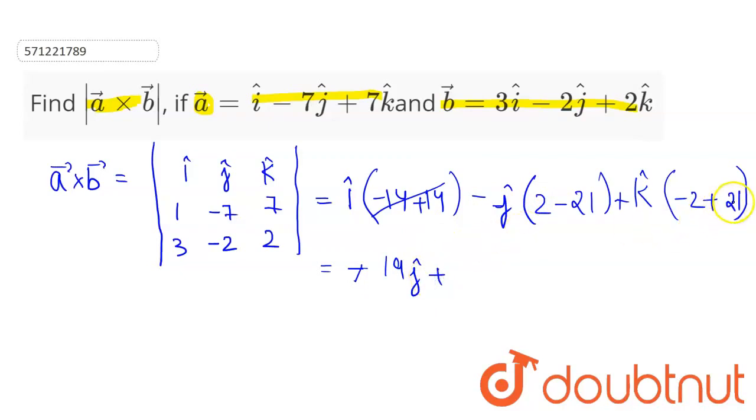For the k cap term, 21 minus 2 is 19, so this will be plus 19 k cap.